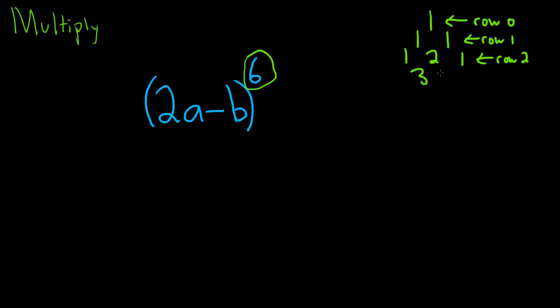So 1 plus 2 is 3. 2 plus 1 is 3. 1's on the sides. And let's keep going. 1 plus 3 is 4. 3 plus 3 is 6. 3 plus 1 is 4. 1's on the sides. So this is row 3. This is row 4.